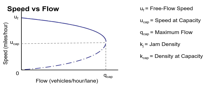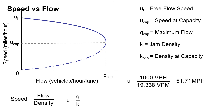Finally, we can look at speed versus flow. We've got the same parabolic shape, but it's on its side now. We know that speed is equal to flow over density — u equals q over k. So in our first situation, we had our flow of 1000 vehicles per hour and our density of 19.338 vehicles per mile, and that gives us a speed of 51.71 miles per hour.